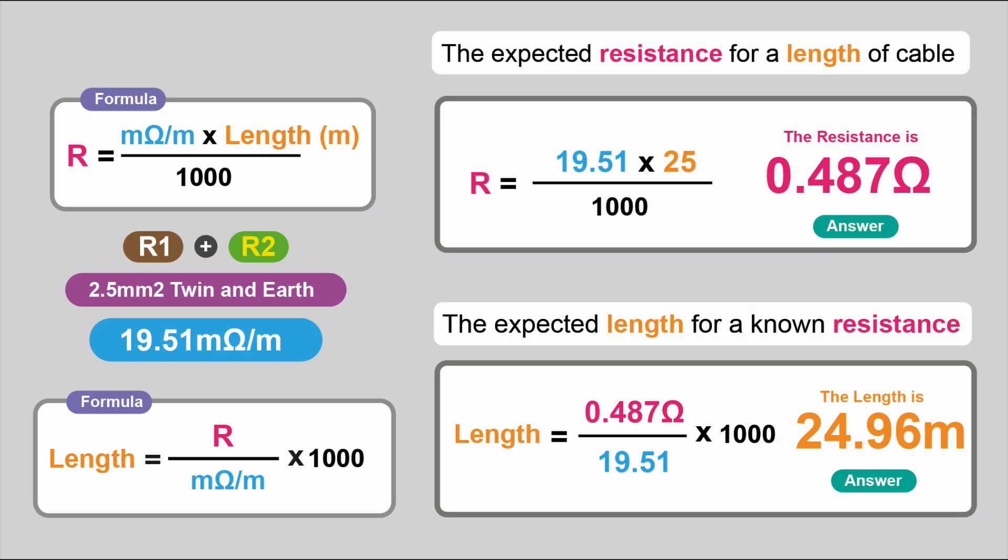So we've been working out the expected resistance for a length of cable. But as mentioned before, we can work out the expected length for a known resistance. It's just a little bit of transposition of the formula. So we're going to do the R1 plus R2 for 2.5 millimetre squared twin-and-earth cable, and that's 19.51 milliohms per metre for the R1 plus R2.